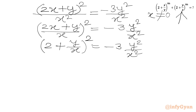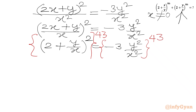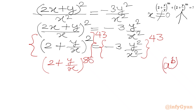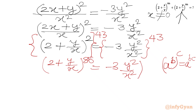Now since the power in our expression is 86, we will raise both sides to the power 43. Using the exponent law (a^b)^c = a^(bc), we get (2 + y/x)^86 on the left-hand side and −3·(y²/x²) whole raised to the power 43 on the right-hand side.